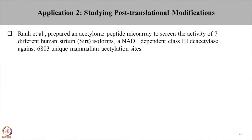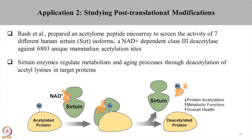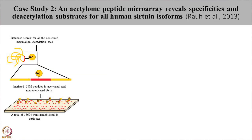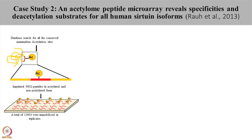Now moving to another study where Raw et al. prepared an acetylome peptide microarray to screen the activity of 7 different isoforms of sirtuins against 6800 unique mammalian acetylation sites. Sirtuins are enzymes which deacetylate lysine residues in the presence of NAD. In this study, a database search was performed to look for all conserved acetylation sites in the mammalian system. A total of 6802 peptides in their acetylated and non-acetylated forms were imprinted. The peptides had lysine at the 7th position flanked by 6 amino acids upstream and downstream, making 13-mer peptides imprinted onto the arrays, with a total of 13,604 peptides immobilized in triplicates.